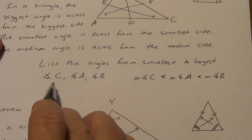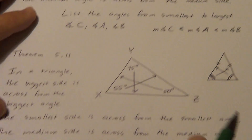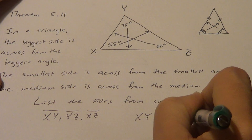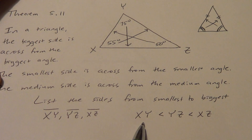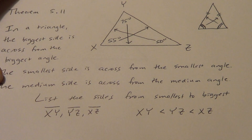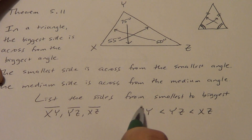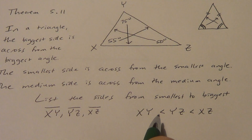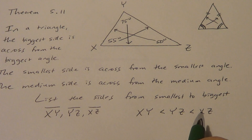Just like before, instead of using commas we can use less-than signs: XY is less than YZ, which is less than XZ. Notice I did not put segment symbols over the top — remember, when we say something like XY equals 5, we don't put the bar over the top. Without the segment symbol, we're talking about a length, which is a number, and with numbers we can use less than and greater than signs.